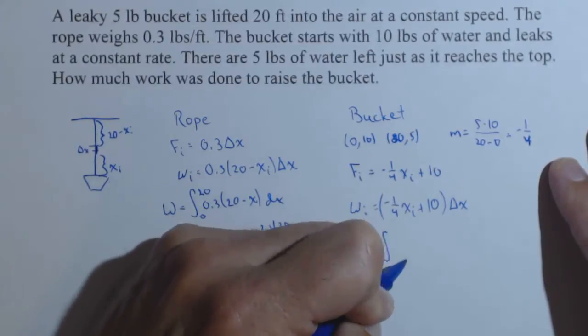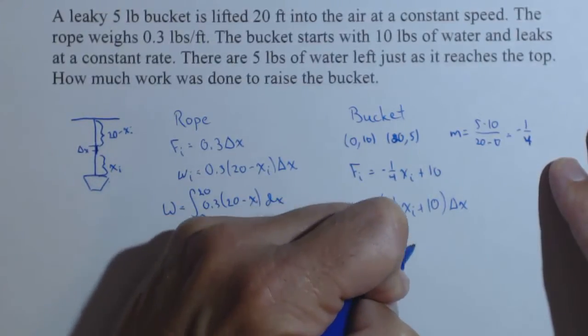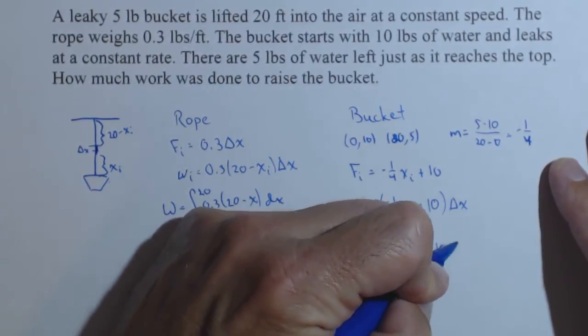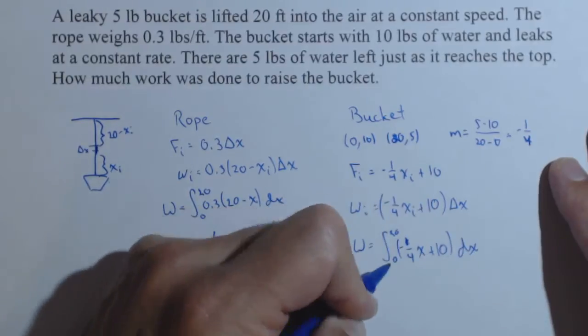So the total work, again, it's going to be 0 to 20, negative 1 fourth x plus 10 dx.